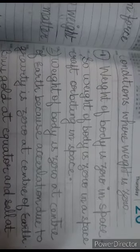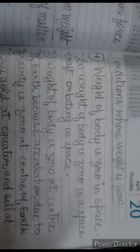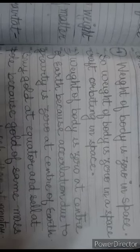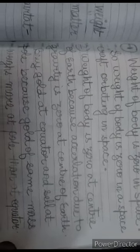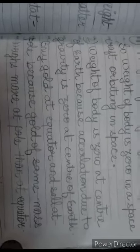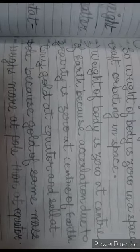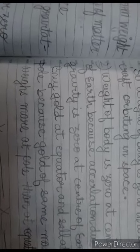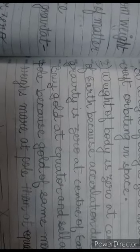Weight of the body is zero in space. So weight of a body is zero in a spacecraft orbiting in space. Weight of a body is zero at the center of earth because acceleration due to gravity is zero at the center of earth. Moreover, it has been said, if you buy gold at the equator and sell it at the pole, because gold of the same mass weighs more at the pole than at the equator. And that last point is this: the weight of the body is different at the equator and poles of earth due to change in the value of acceleration due to gravity.